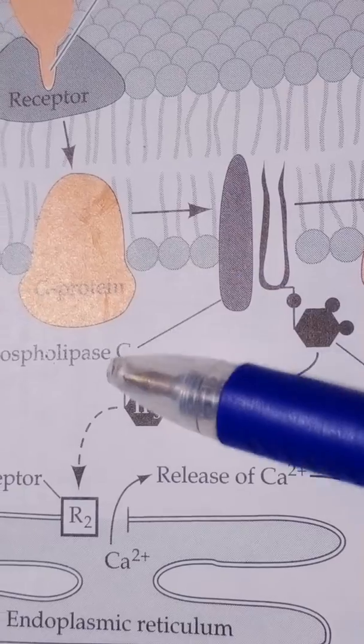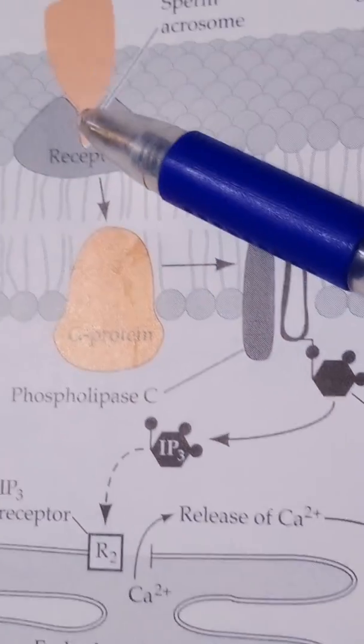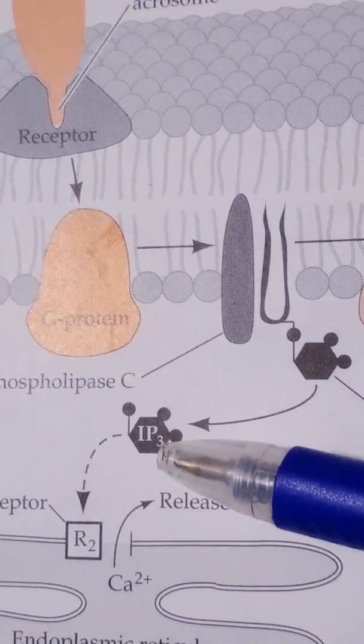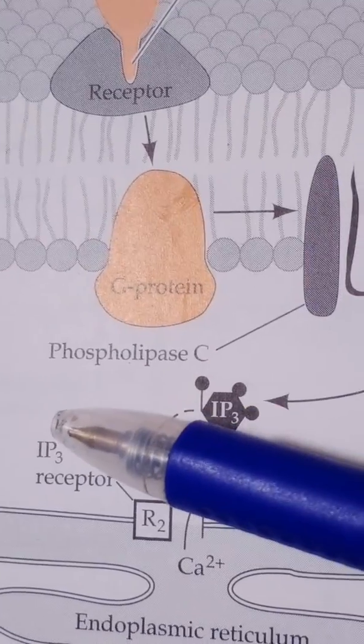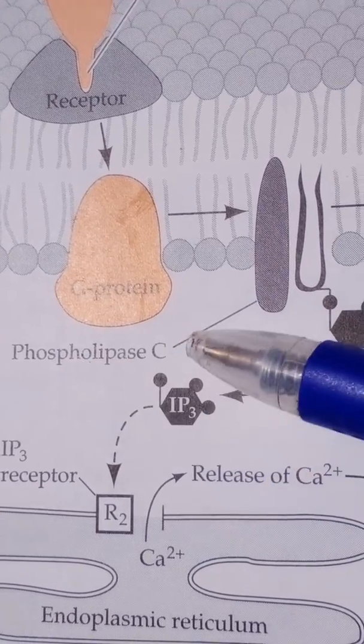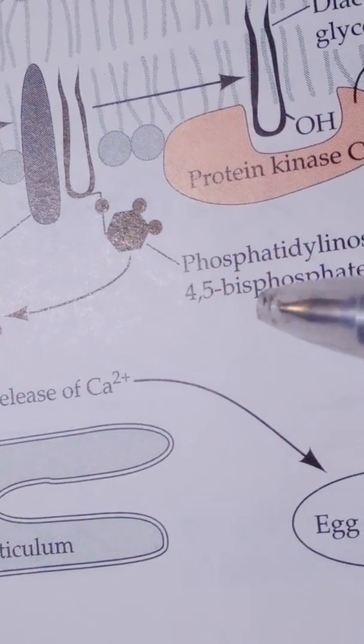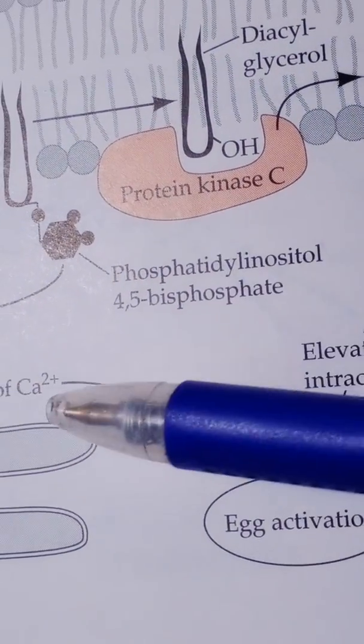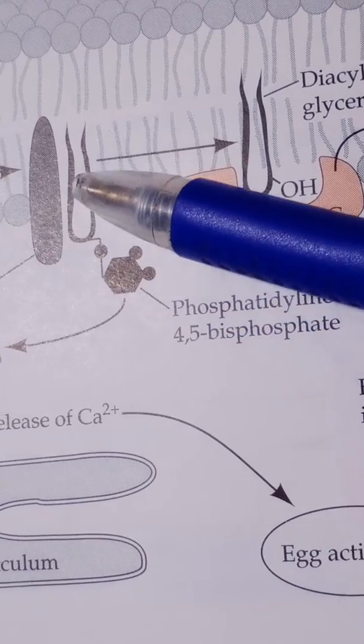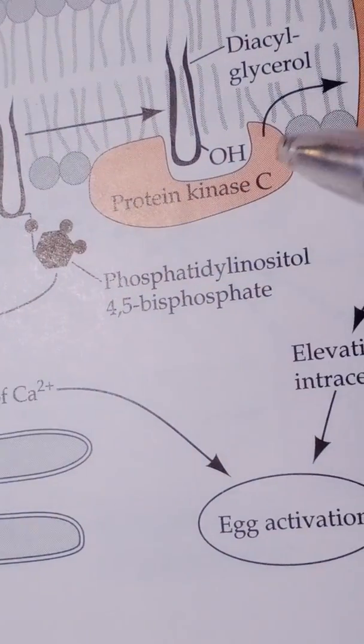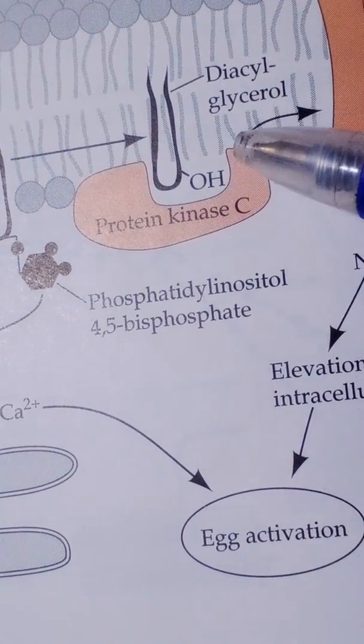As the G protein is activated, as the receptor receives the sperm head, the G protein is activated. It causes the phospholipase C activation. And it activates phosphatidylinositol bisphosphate activation. And it also causes the diacylglycerol production.